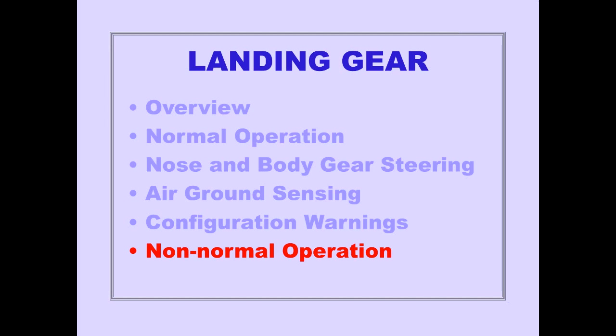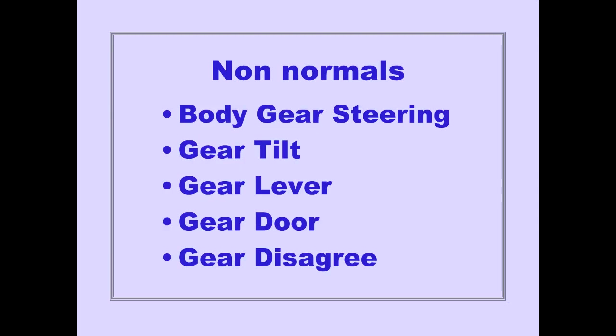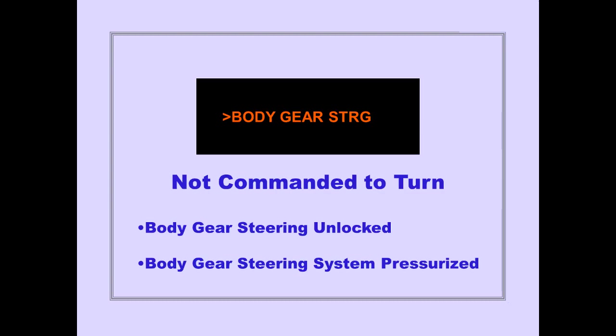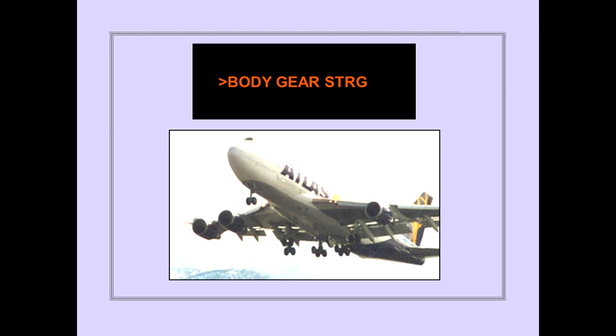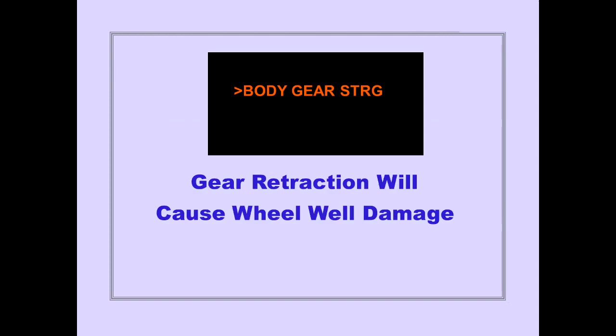Let's now discuss non-normal operation. Non-normals include body gear steering, gear tilt, gear lever, gear door, and gear disagree. On the ground, the ICAS advisory message body gear steering is displayed when the body gear has not been commanded to turn and body gear steering is unlocked, or the body gear steering system is pressurized. The ICAS advisory message body gear steering is also displayed after takeoff when the body gear are not centered. When the body gear are not centered, gear retraction will cause wheel well damage.